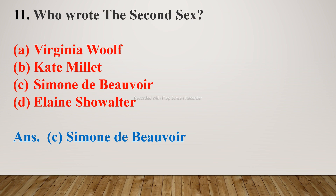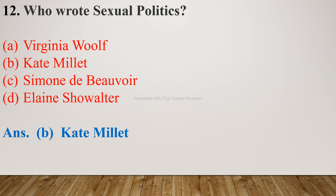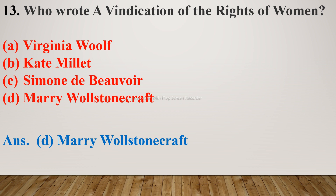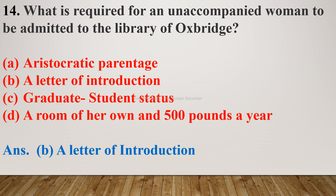Question number 11: Who wrote The Second Sex? Options are A. Virginia Woolf, B. Kate Millett, C. Simone de Beauvoir, D. Elaine Showalter. The right answer is C. Simone de Beauvoir. Question number 12: Who wrote Sexual Politics? Options are A. Virginia Woolf, B. Kate Millett, C. Simone de Beauvoir, D. Elaine Showalter. The right answer is B. Kate Millett. Question number 13: Who wrote A Vindication of the Rights of Women? Options are A. Virginia Woolf, B. Kate Millett, C. Simone de Beauvoir, D. Mary Wollstonecraft. The right answer is D. Mary Wollstonecraft.